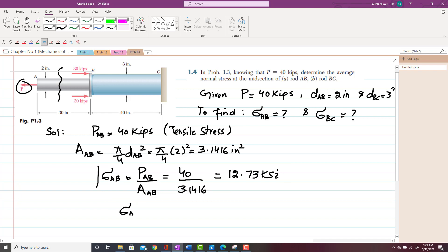So since this stress is positive, definitely this σAB will be a tensile stress. σAB is equal to 12.73 KSI. So this is a tensile stress.